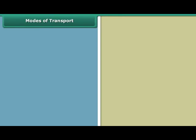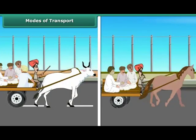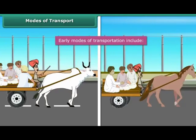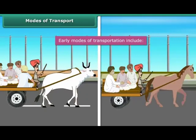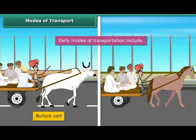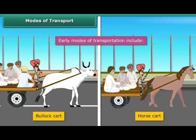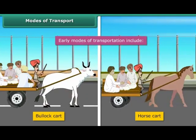Modes of transport. Have you wondered how people travelled in the earlier days? In the early days, people used animals to travel from one place to another. For example, bullock cart, horse cart etc. Can you imagine using a bullock cart to come to school every day now?